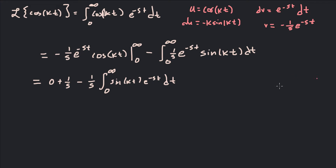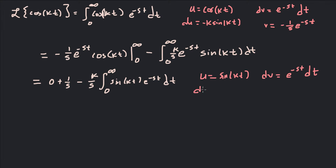Now we're going to do integration by parts again. I'm going to pick u equals sine kt — and I notice I lost my k earlier, it should be k over s. So u equals sine kt, dv equals e to the negative st dt. Then du is going to be k cosine kt, and v is going to be negative 1 over s times e to the negative st.